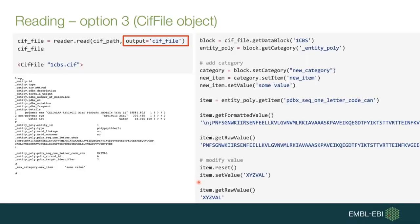The third option is to specify output as sif_file. You can use this option when you want to modify the content of the mmCIF file extensively through a number of different shorthand functions, which allow you to extract the data block, extract categories out of the data block, create new categories in your data block, as well as access values of data items in their formatted manner as they appear in the mmCIF file, as well as the raw value.